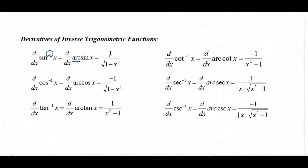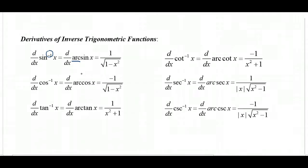The derivative of arc sine is one over the square root of one minus x squared. The derivative of arc cosine is negative one over the square root of one minus x squared. Notice the pattern: the derivative of sine is positive cosine, and the derivative of cosine is negative sine — the same positive/negative relationship holds for arc sine and arc cosine.